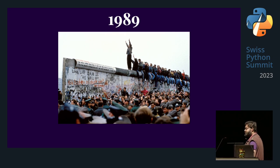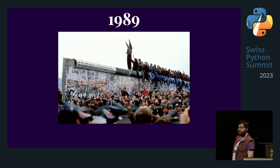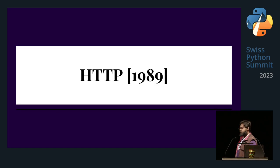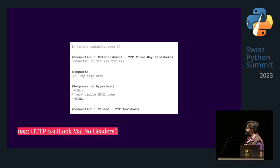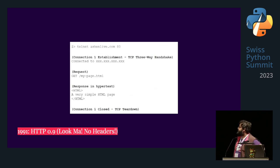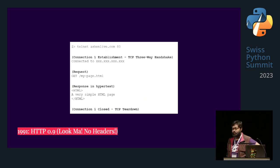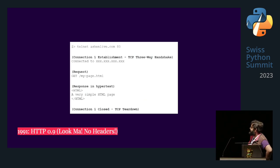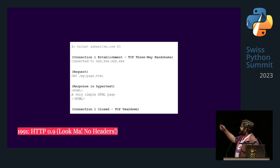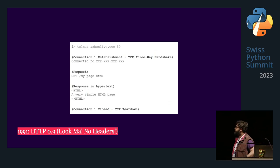Where do we begin? We begin in 1989. Some people were bringing down walls, other people were working on HTTP. This is the first version of HTTP — HTTP 0.9. I had to work really hard to find this example on a person called Tim BL's website. Tim BL, who you might not know, is Tim Berners-Lee, who actually still has this website up and running. This is pretty much the first version of HTTP that was used — it has GET and that's about it.